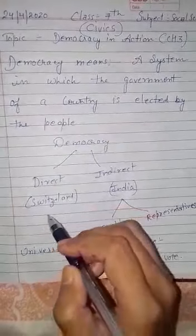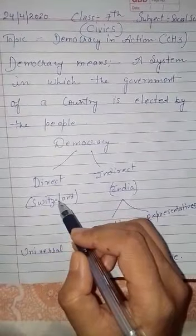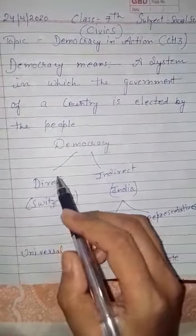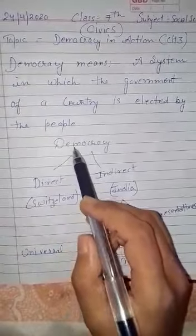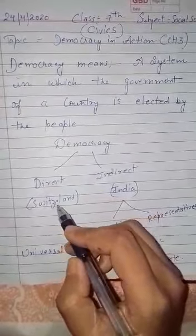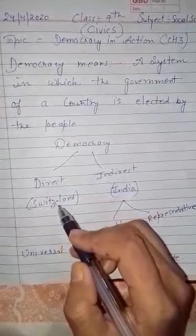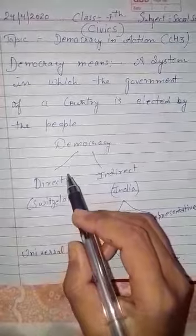In the world, we have Switzerland as a country following direct democracy. Here the people are directly involved in the decision-making process.